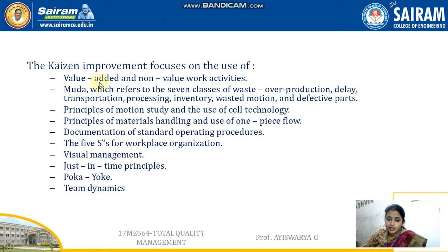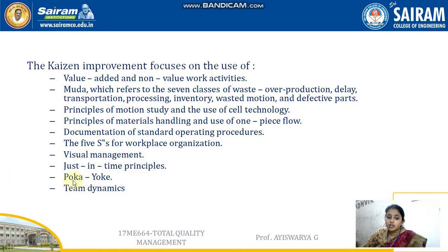So if we segregate value-added and non-value-added activities, understand the different types of waste happening in our company, find smarter ways to do the work, use one-piece flow to customize and save for future reference, avoid poor quality, document proper operating procedures, adopt 5S, apply visual management to find and rectify errors, deliver products on time, apply Poka-yoke to find mistakes, and finally if our team works very dynamically — our Kaizen will be improved.